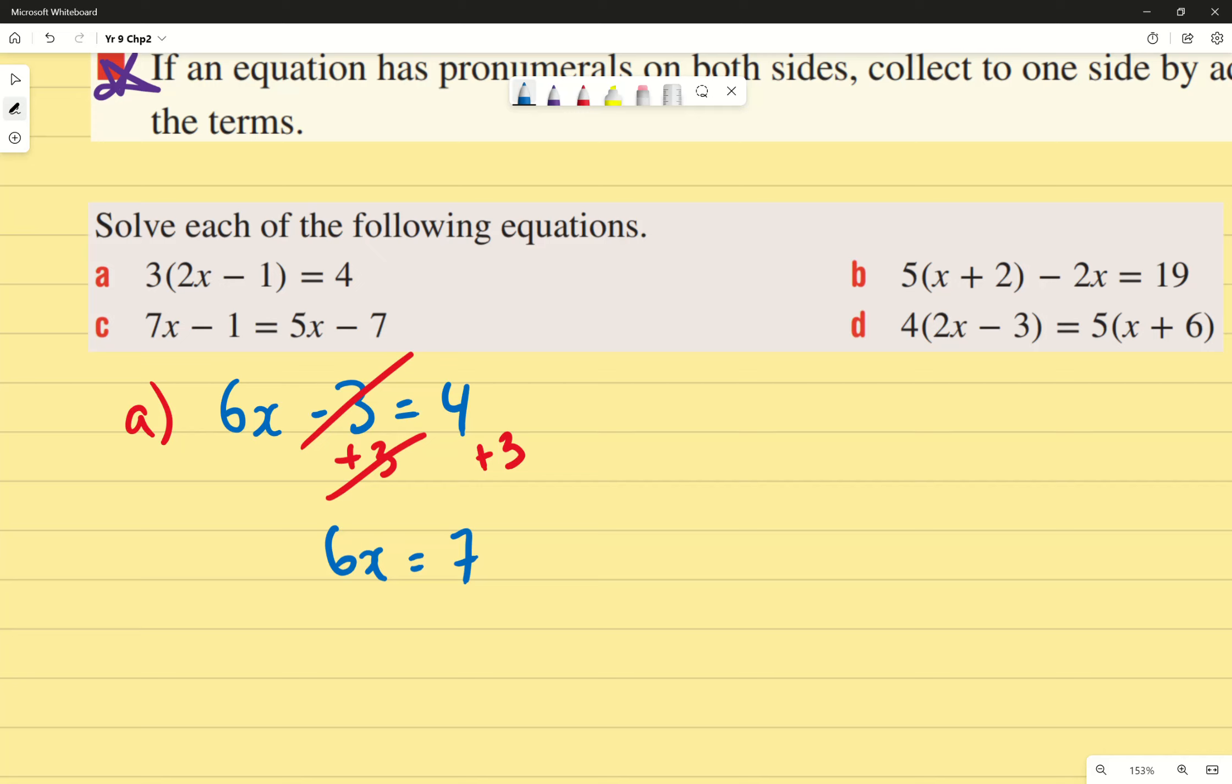These two cancel out and I end up with 6x equals to 7. Dividing both sides by 6, I'm going to skip the step of writing divided by 6 and just write x equals to 7 over 6. Any questions? Hayden, any questions? Does that seem okay, doable for us so far? Great.